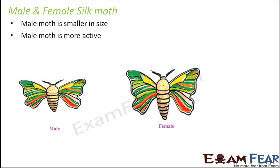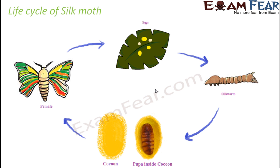The female moth has a bigger abdomen because it lays eggs — the eggs are stored inside, requiring extra space. When we talk about the life cycle, we focus on the female silk moth because she produces eggs. Like how babies are born and gradually grow into adults over many years, the silk moth has a similar life cycle. The female moth lays eggs, and this is where the life cycle starts.